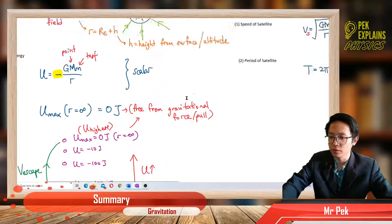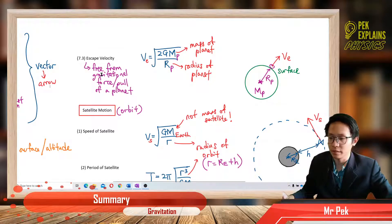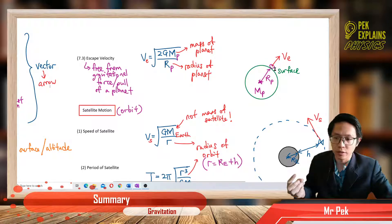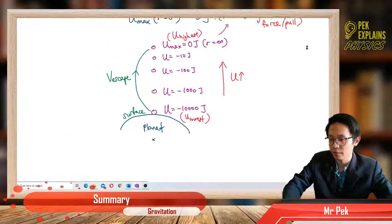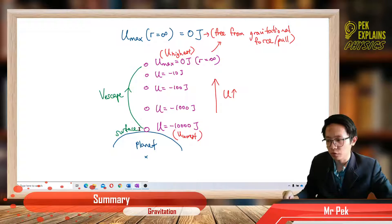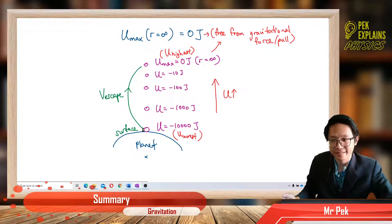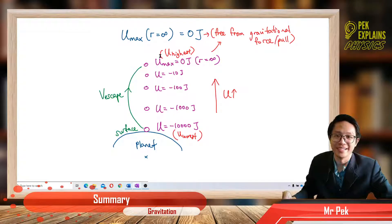Now escape velocity. What is meant by escape velocity? Escape velocity is when you are at the surface of a certain planet and you want to escape from the gravitational pull. The object is on the surface and you want to escape from the gravitational force. You want to go from most negative — from the surface — to infinity distance where U equals zero. You need to jump with escape velocity in order to achieve this — a velocity we call escape velocity.